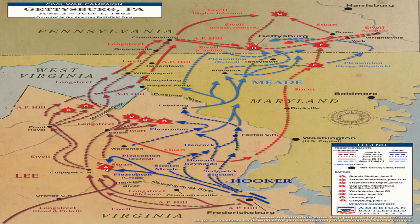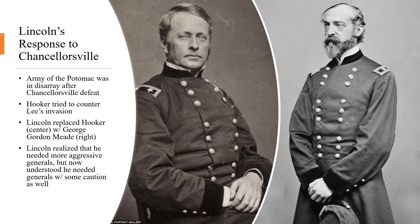After Chancellorsville, Lee and Jefferson Davis agreed that the Army of Northern Virginia should once again invade the North, rather than sending troops west to relieve Grant's siege of Vicksburg. This time, Lee would push further north into Pennsylvania, threatening Washington DC and the major northern city of Philadelphia. In a series of battles in June 1863, Lee divided his army and began his northward advance with troops both east and west of the Union Army. The Army of the Potomac was in no position to stop Lee. Hooker retreated in an attempt to block Lee but was removed from command at the end of June and replaced by George Gordon Meade, one of his corps commanders.